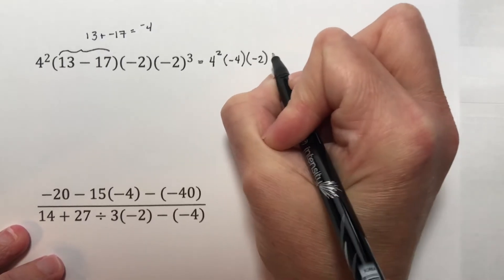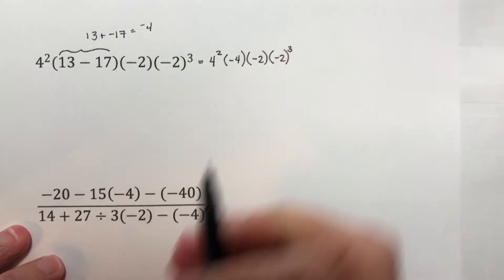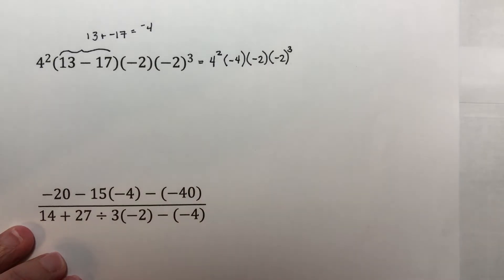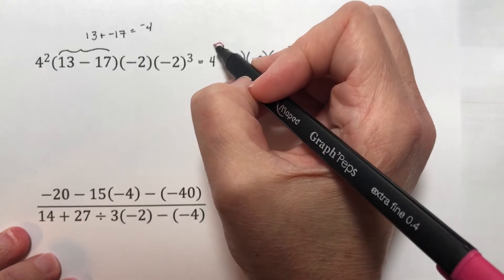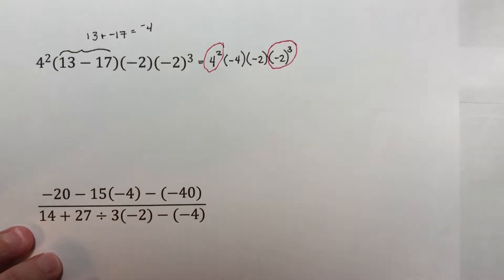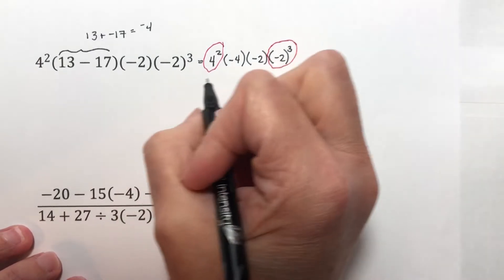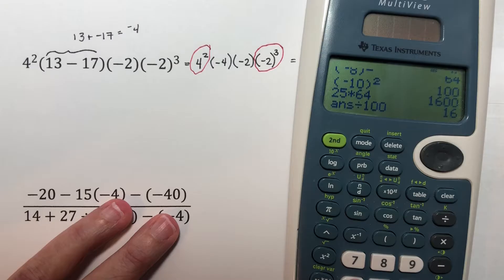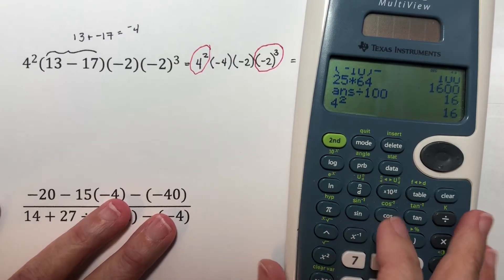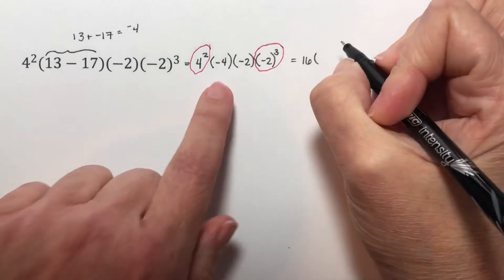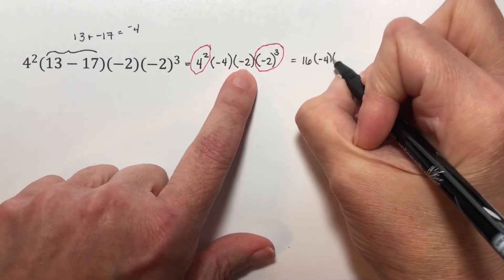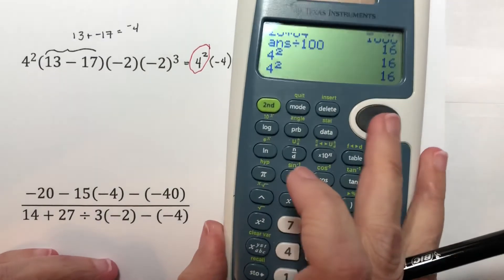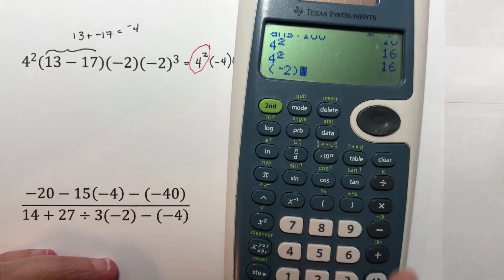Times negative 2 times negative 2 cubed. My parentheses are all as simple as they can be. My next step is exponents, and I have two exponent problems in here. What is 4 squared? 4 times 4 — you can use your calculator — 4 times 4 gives 16. So this is 16 times negative 4 times negative 2 times negative 2 raised to the third power, and that negative 2 should go in parentheses.